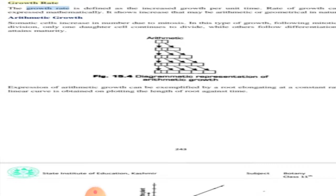The process continues. Mathematically, arithmetic growth is expressed as Lt = L0 + rt, where Lt is length at time t, L0 is length at the beginning, r is growth rate.